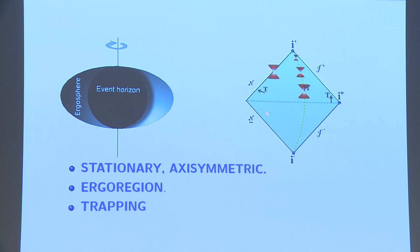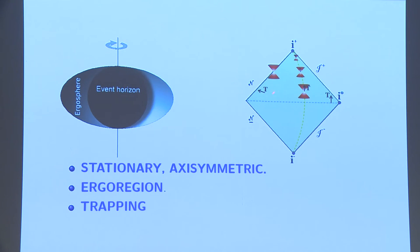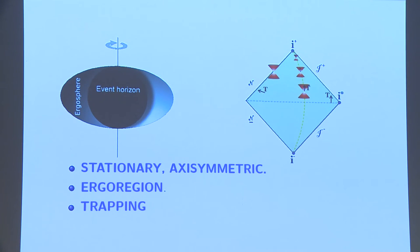The vector field capital T — the stationary Killing vector field — is time-like near infinity. The remarkable thing is that T becomes space-like near the horizon. Even though it started by being time-like, it is space-like near the horizon. This leads to mathematical difficulties because energy is always tied to a time-like Killing vector field, so coercivity disappears in places where T is space-like. This is the ergo region.